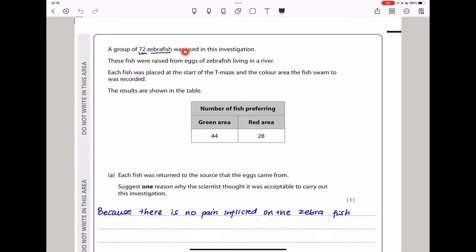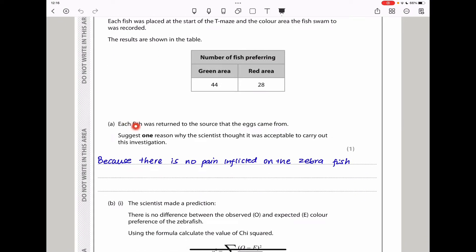A group of 72 zebrafish were used in this investigation. These fish were raised from eggs of zebrafish living in a river. Each fish was placed at the start of the T-maze, and the color areas the fish swam to were recorded. The results showed that 44 fish preferred green and 28 preferred red. Each fish was returned to the source that the eggs came from.